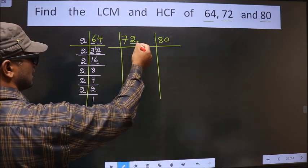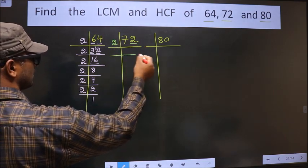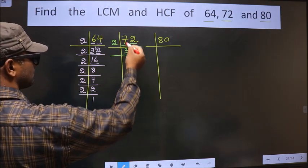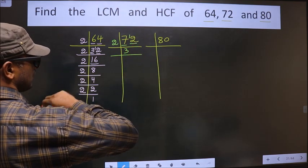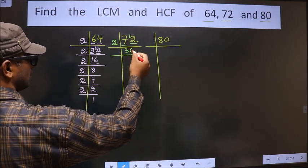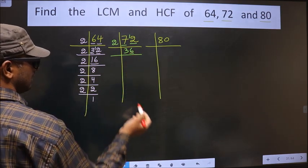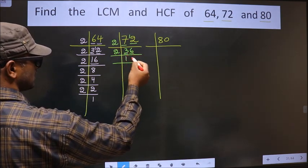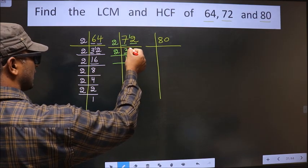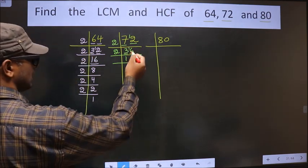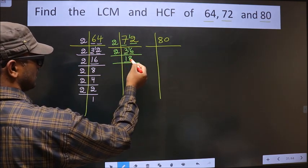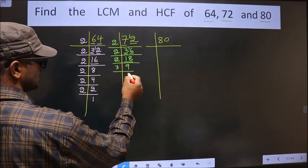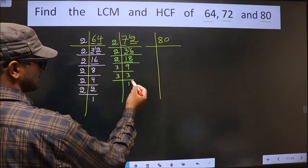For 72, the last digit is 2, which is even, so we take 2 here. The first number is 7. A number close to 7 in the 2 table is 2 times 3 is 6. 7 minus 6 is 1, carried forward making it 12. When do we get 12 in the 2 table? 2 times 6 is 12. The last digit is now 6, which is even, so we take 2 here. First number is 3; 2 times 1 is 2. 3 minus 2 is 1, carried forward making it 16. 2 times 8 is 16. Now we have 18: 2 times 9 is 18. Now 9 is 3 times 3 is 9. 3 is a prime number, so we take 3 times 1 is 3.